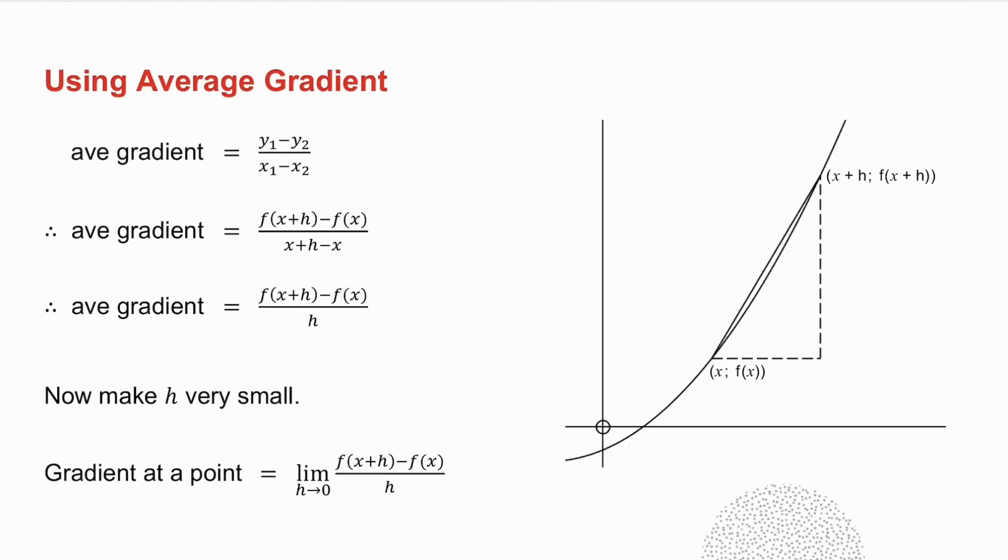So what I'm going to do, I want to find the gradient at this point. So I take another point and I'm now going to get the average gradient between these two points. In other words, I'm going to get the gradient of the straight line joining those two points. So how do I get the gradient of the straight line joining those two points?